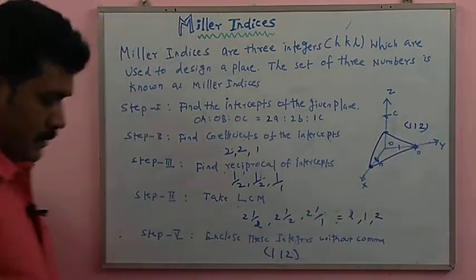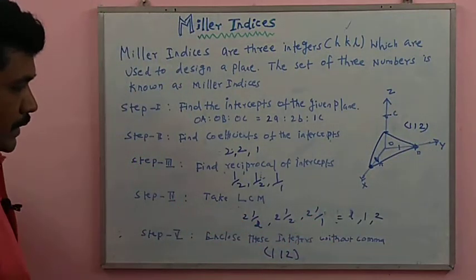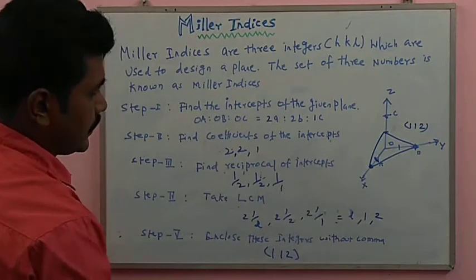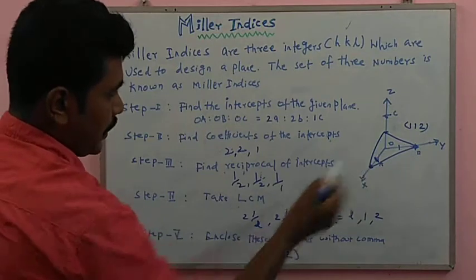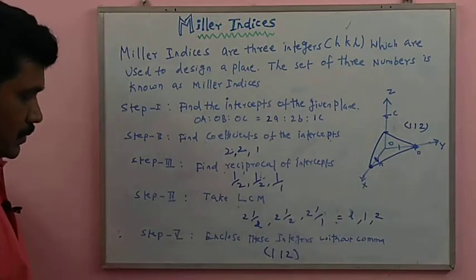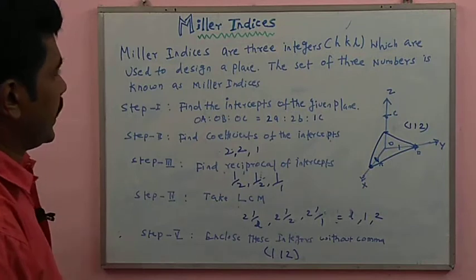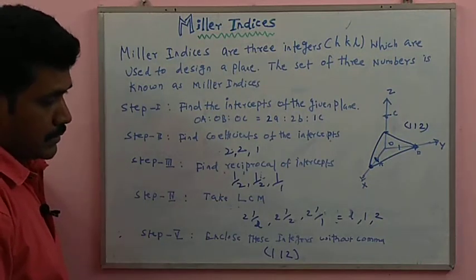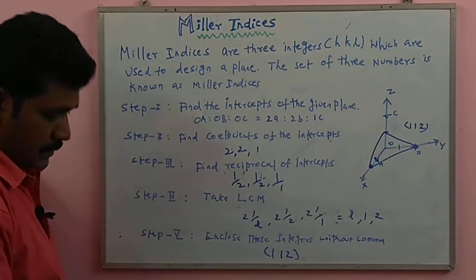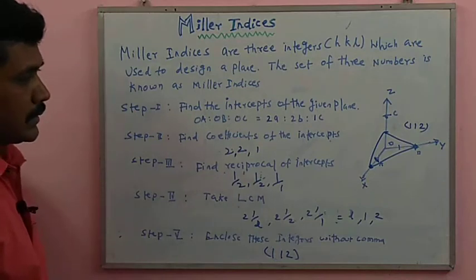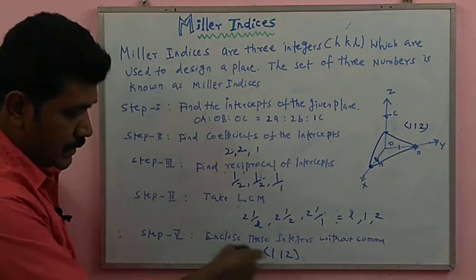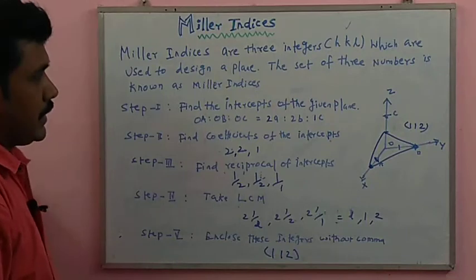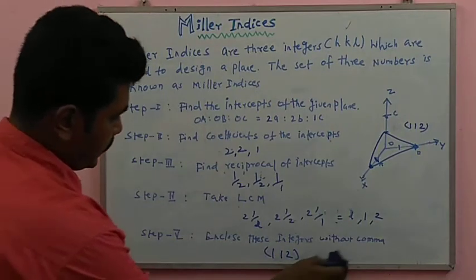These three integers indicate what type of plane it is. Miller indices are used with many more examples of plane structures. Next, we look at examples of different types of planes.